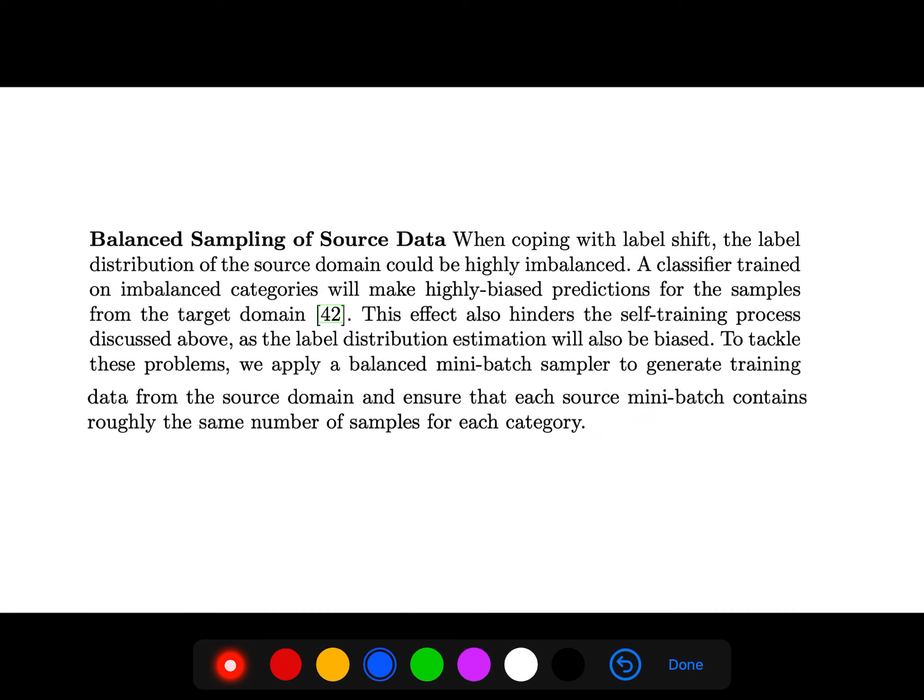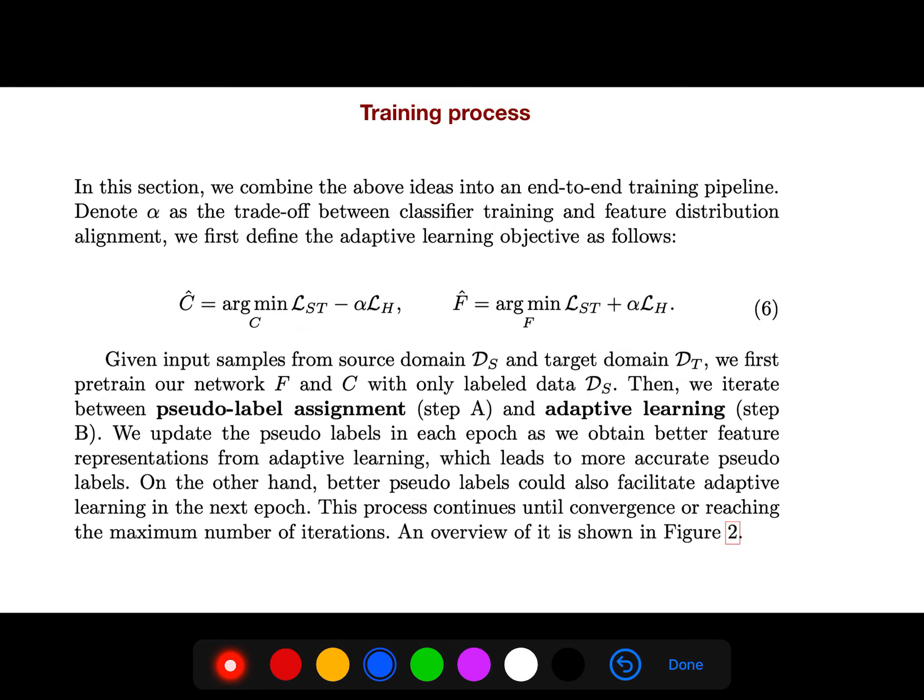When coping with label shift, the label distribution of the source domain could be highly imbalanced. A classifier trained on imbalance categories will yield highly biased predictions. This effect also hinders the self-training process that we discussed. So in this section, we combine the above ideas into end-to-end training pipeline.